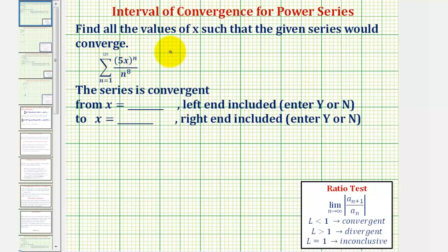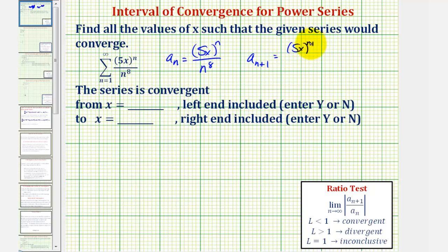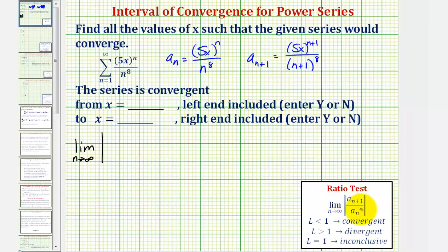Looking at our series, a sub n would be equal to five x raised to the power of n divided by n to the eighth. And a sub n plus one would be equal to five x to the power of n plus one divided by the quantity n plus one to the eighth. So now we'll apply the ratio test: we'll have the limit as n approaches infinity of the absolute value of a sub n plus one divided by a sub n.